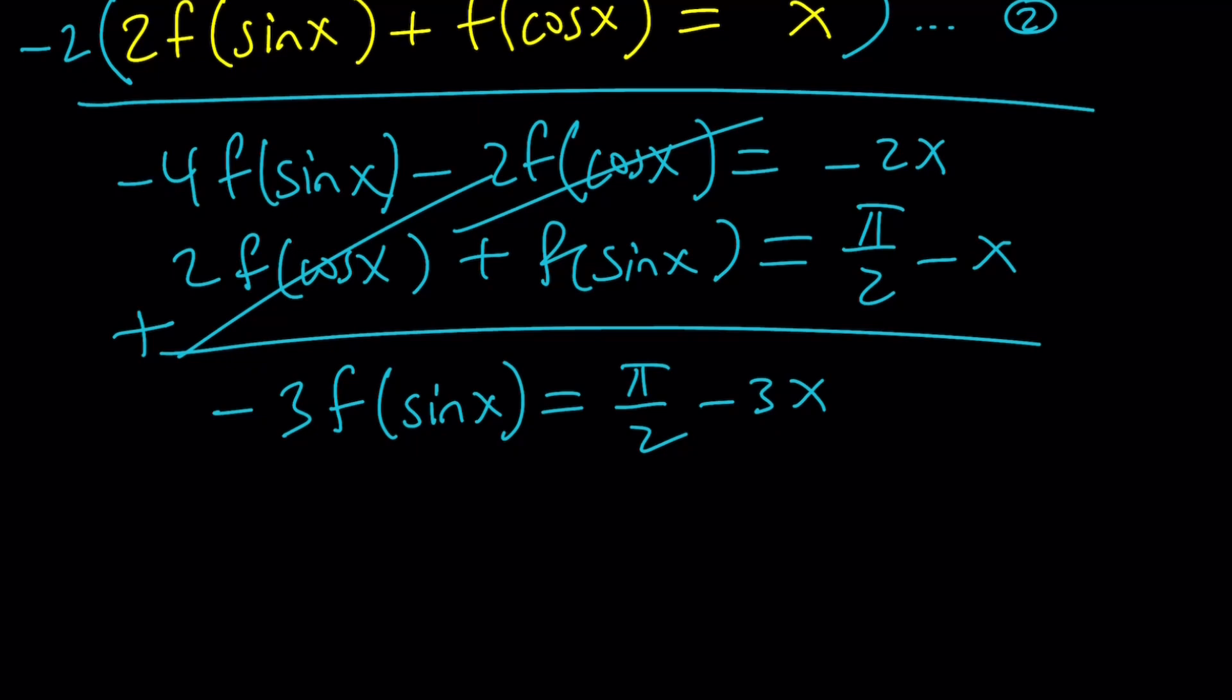Let's divide everything by negative 3. We get f of sine x. When you multiply by negative 1, it's going to flip and then divide by 3. You're going to get x minus pi over 6. So that's f of sine x. We're pretty close, we're almost there. We just need f of x.